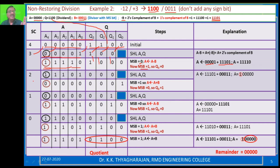Now step 2. You have to repeat the same three steps. Shift left A and Q. After shifting left, the bits move over — this will go out and this one will come here. After shifting left, you are having 11101 in A and 000 in Q, plus one blank position.